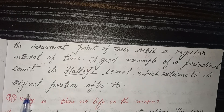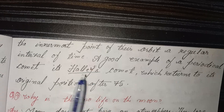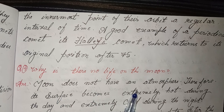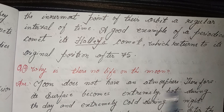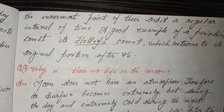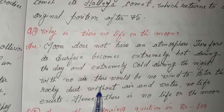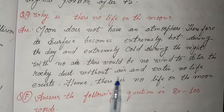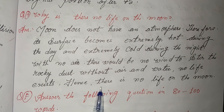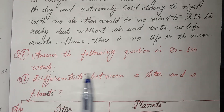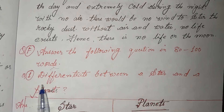Four, why is there no life on the moon? Answer: the moon does not have an atmosphere, therefore its surface becomes extremely hot during the day and extremely cold during the night. With no air, there would be no wind to stir the rocky dust. Without air and water, no life can exist, hence there is no life on the moon.